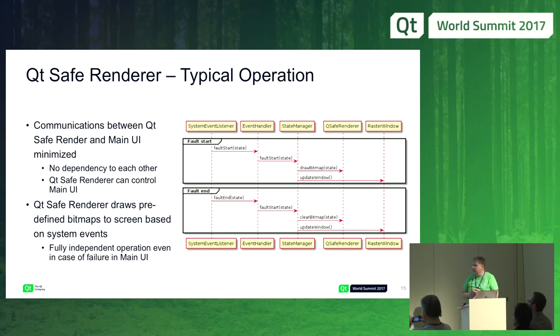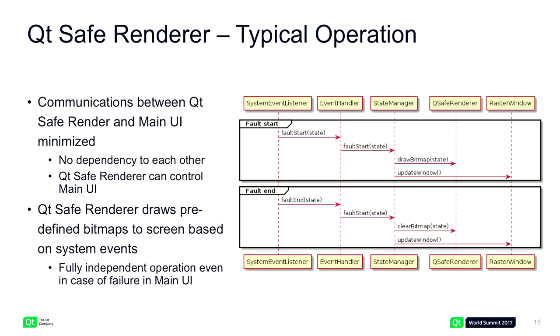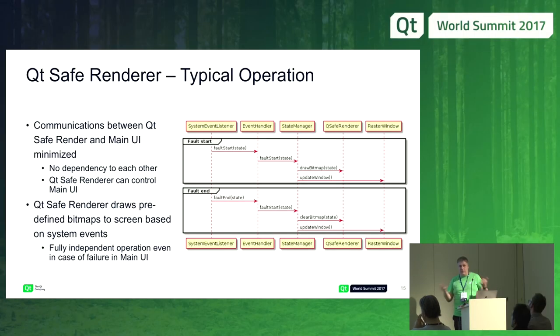Here's a sequence diagram showing typical operation. The safe renderer listens to events coming from the system. There's a fault condition starting — a fault event causes the safe renderer to draw a bitmap corresponding to that state. When the fault condition ends, a signal comes that the state is ending, and similarly the renderer clears the bitmap from the screen based on this event. It simply listens to events and reacts to them.